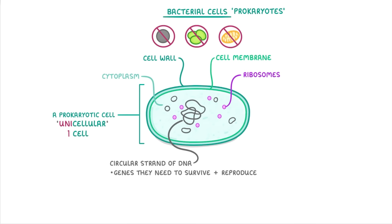You might also see this labelled the circular chromosome or nucleoid. But they all mean basically the same thing, it's just a big loop of DNA.